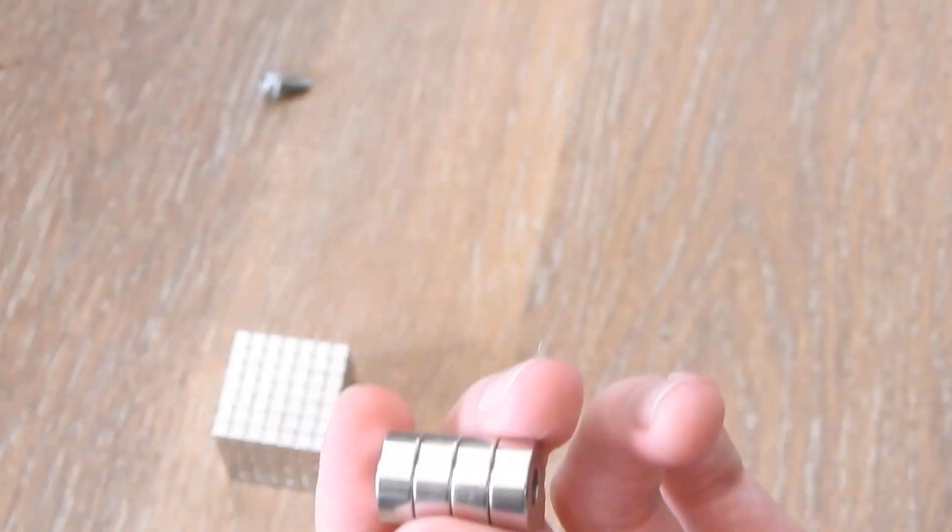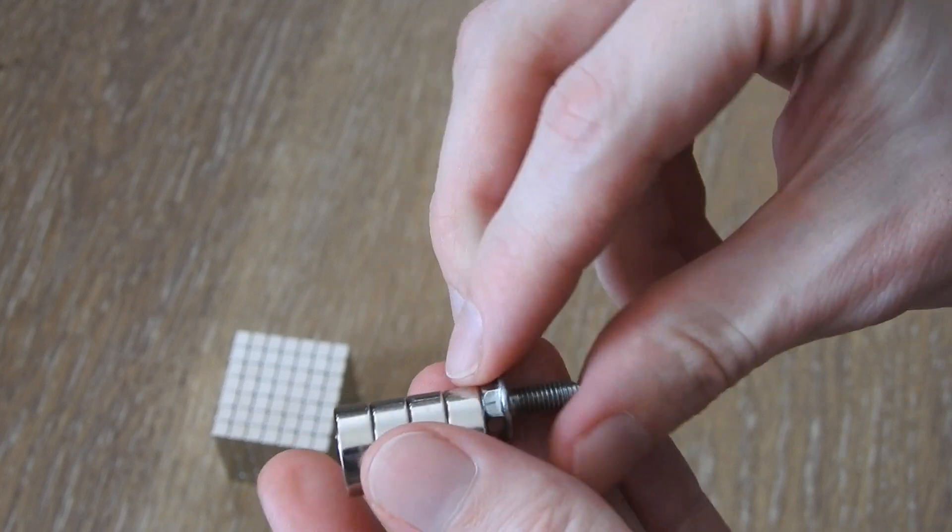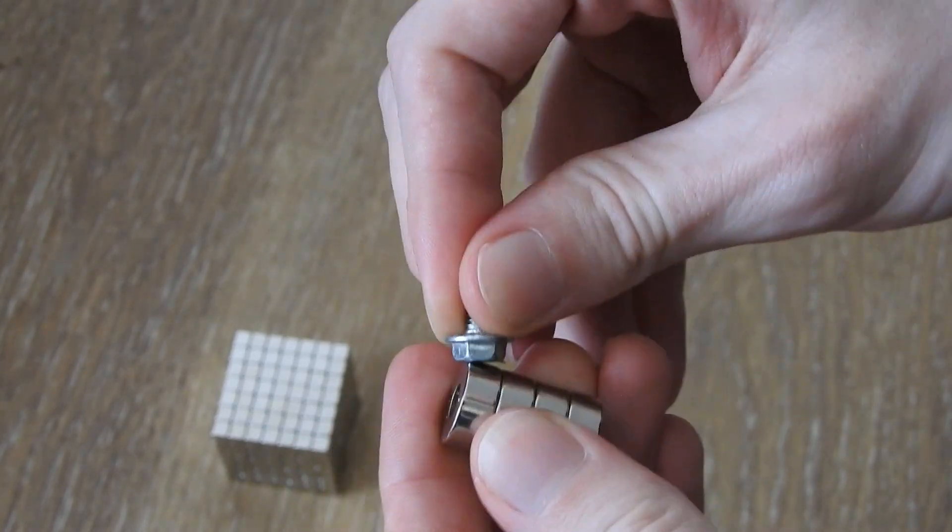If you take a screw like this it wants to stick on the poles of course because here it is attracted the strongest.